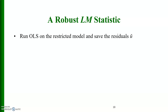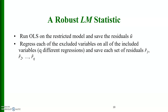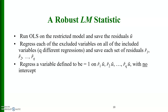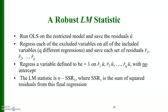A robust LM statistic: run OLS on the restricted model and save the residuals u-hat. Then regress each of the excluded variables on all of the included variables — q different regressions — and save each set of residuals r1, r2 up to rq. Then regress a vector of ones on r1*u-hat, up to rq*u-hat with no intercept. The LM statistic is n minus SSR1, where SSR1 is the sum of squared residuals from this final regression.